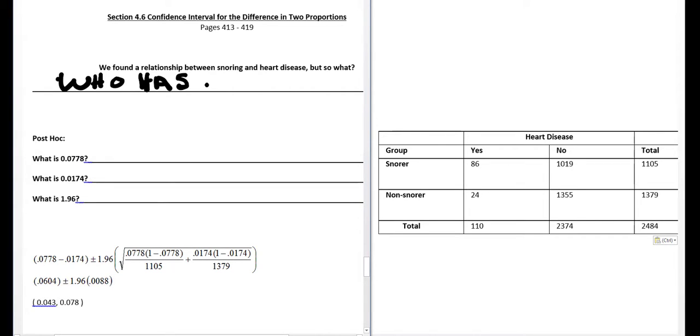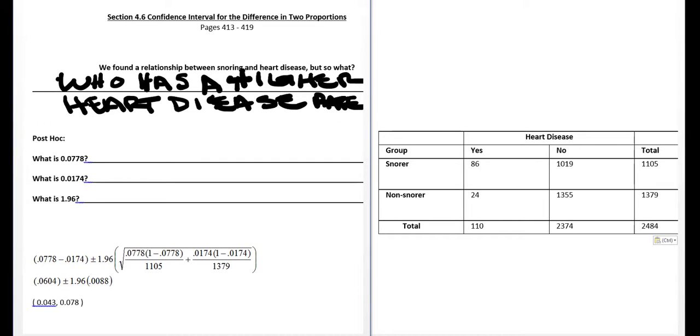To be able to calculate this, we first need to figure out the proportion of snorers with heart disease versus the proportion of non-snorers with heart disease. For these problems, I am interested in a success: yes, they have heart disease.